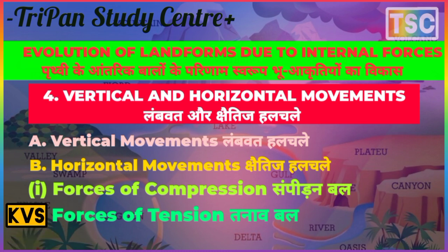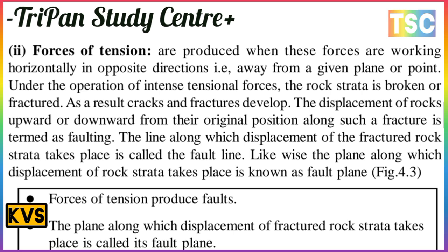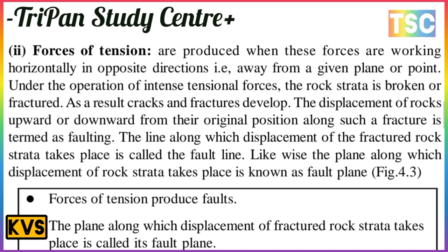The force of tension is produced when forces work horizontally in opposite directions, away from a given point. Under the operation of tensional forces, the rock strata are broken or fractured, resulting in cracks and fractures. The displacement of rocks upward or downward from their original position along such a fracture is termed faulting. The line along which displacement of rock strata takes place is called the fault line.